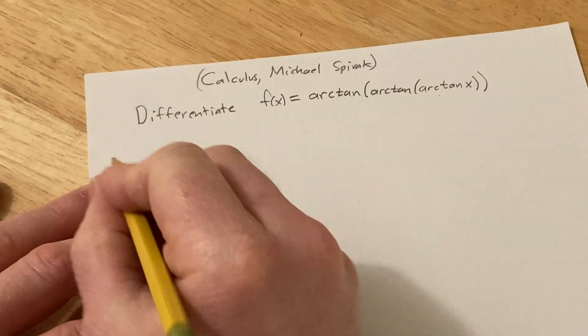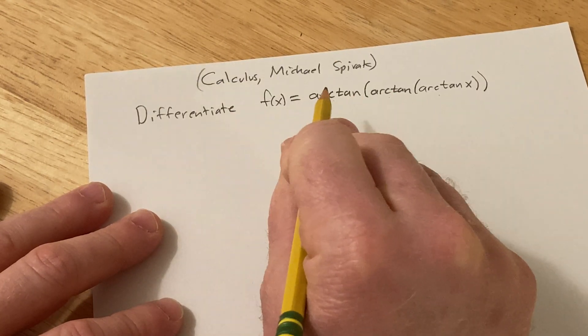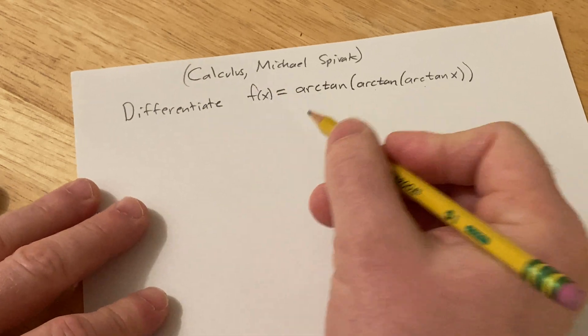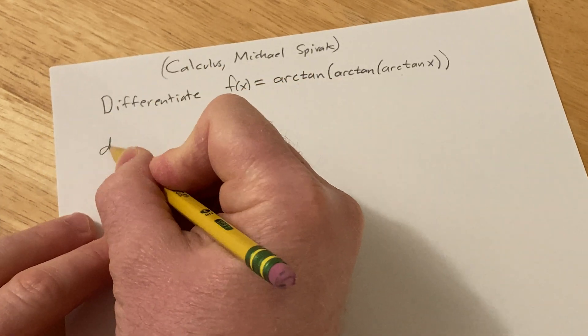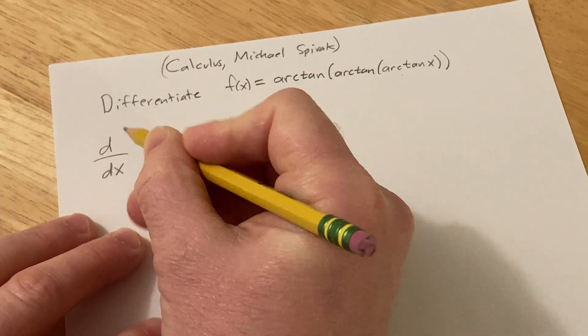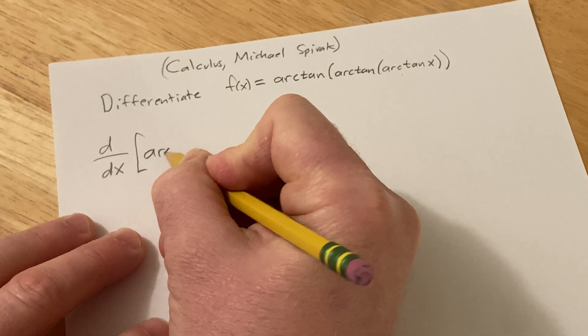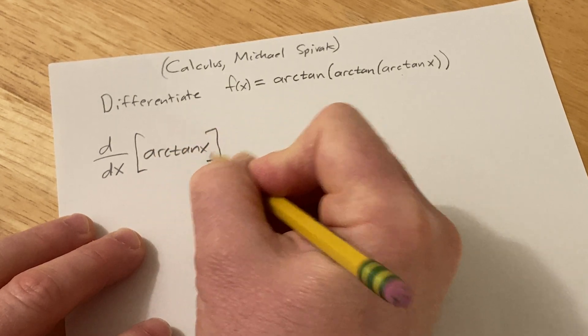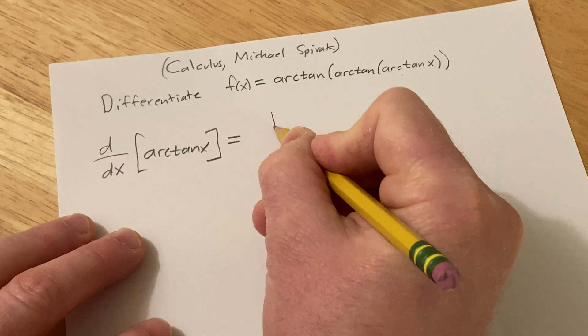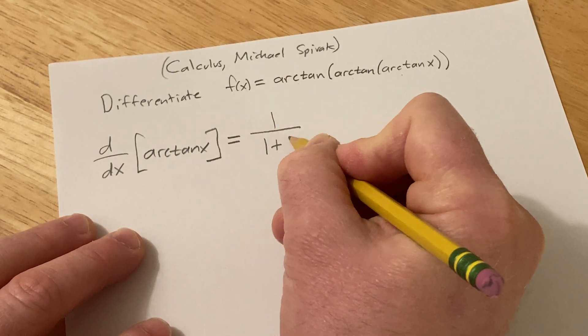Okay, so let's do this problem. So first, you should know what the derivative of just arctan x actually is. So if you just have d/dx of arctangent of x, this is equal to 1 over 1 plus x squared.